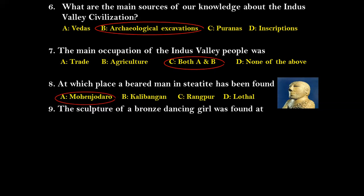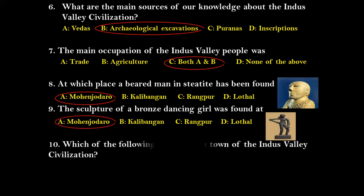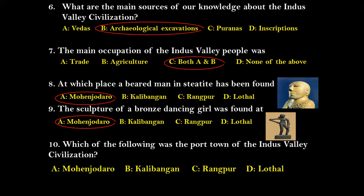Question nine: The sculpture of a bronze dancing girl was found at — Mohenjo-Daro, Kalibangan, Rangpur, or Lothal? The right answer is Mohenjo-Daro. Question ten: Which of the following was the port city of the Indus Valley Civilization? The right answer is option D — Lothal.